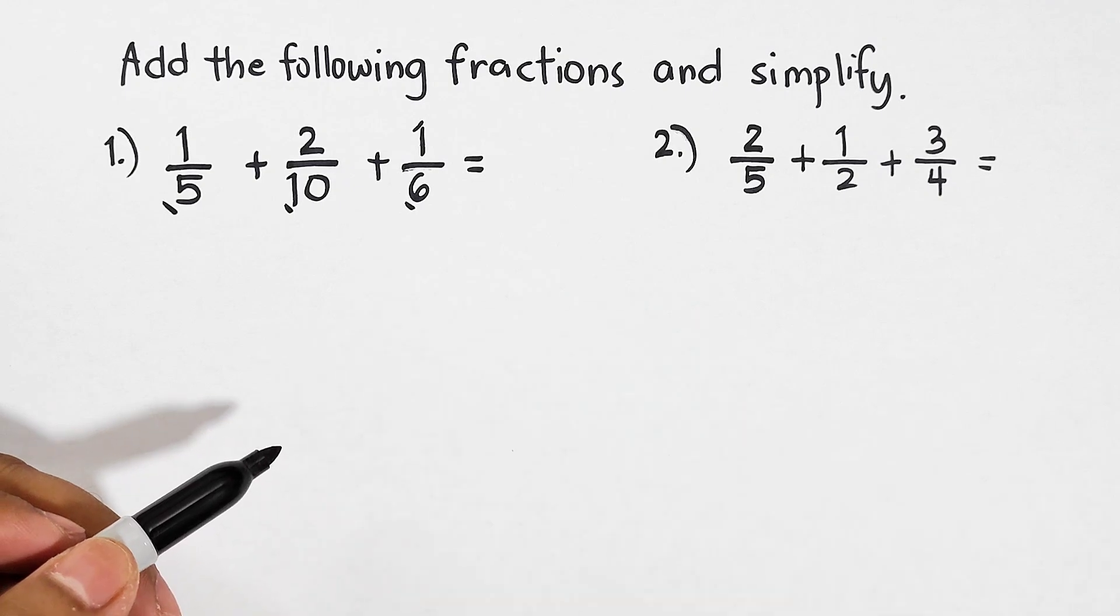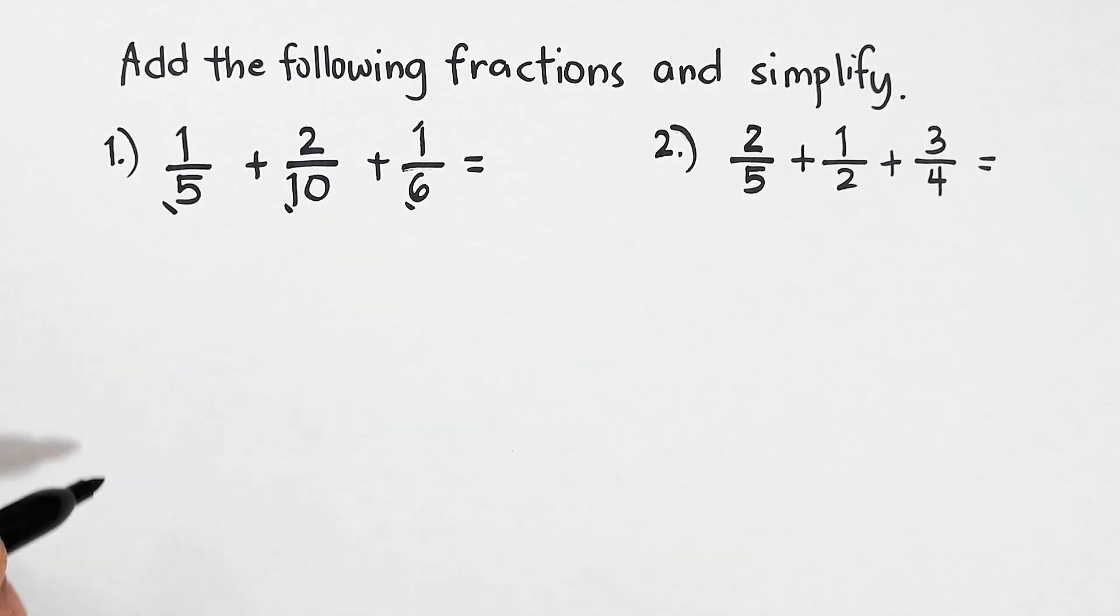For us to know the LCD, we need to get the least common multiple between 5, 10, and 6 by listing the multiples of 5, 10, and 6. For 5, we need to list down all the multiples of it which are